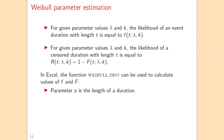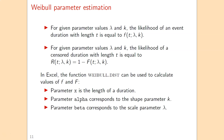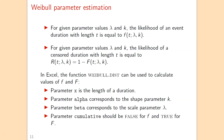In Excel, x refers to the length of the duration. Excel uses alpha and beta for the parameters: instead of k we use alpha, and instead of lambda we use beta. There is also a fourth parameter, cumulative, which should be set to false to evaluate the density function and to true to evaluate the distribution function.